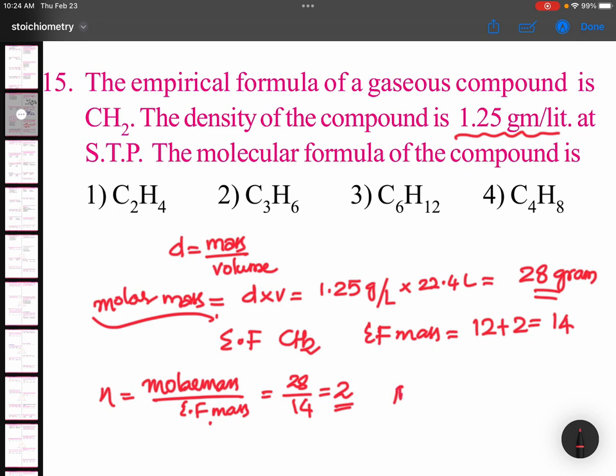Now, if you want molecular formula, empirical formula must be multiplied by this N factor. So CH2 multiplied by 2 gives us C2H4.